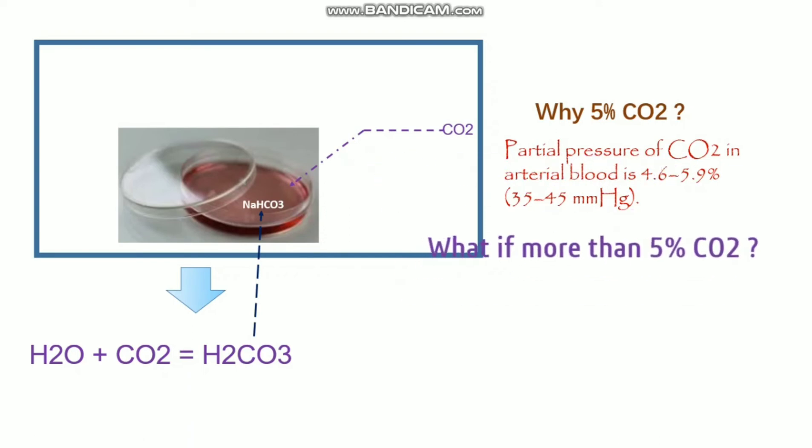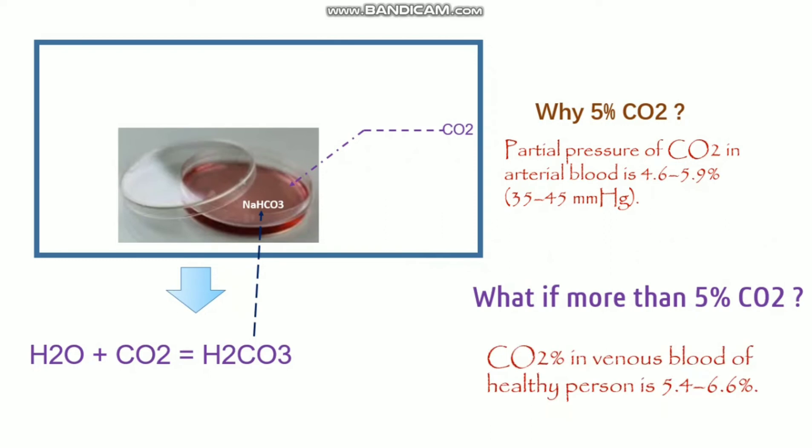Next question: what if more than 5% carbon dioxide? That is also an important question. The carbon dioxide percentage can be varied, can be set depending on experimental purpose. For example, venous blood of a healthy person is around 5.4 to 6.6%, and also some cell lines require higher percentage of carbon dioxide for better growth, around 8 to 10% carbon dioxide. Suspension cells in some cases require higher percentage of carbon dioxide. This carbon dioxide percentage can be varied and set according to your experimental purpose.